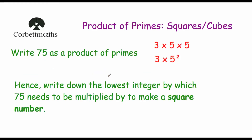Part B of a typical question like this would be: hence write down the lowest integer by which 75 needs to be multiplied by to make a square number. Multiplying it by 2 would be 150, that's not a square number. A trial and error approach can be quite time consuming, particularly if the answer is a large number. So having a technique such as using the product of primes can be really useful.